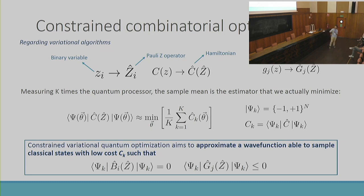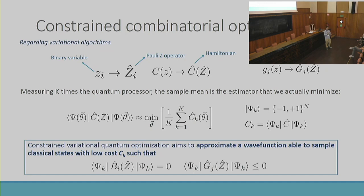Regarding variational algorithms, we solve these problems by mapping the objective function to a Hamiltonian, mapping binary variables to Pauli Z operators. We have no direct access to the full variational wave function — only to samples obtained by measuring it. These samples are classical states, strings of zeros or ones. So at the end of the day, what we want in variational quantum optimization is to approximate a variational wave function that concentrates on the feasible subspace.